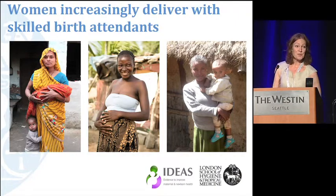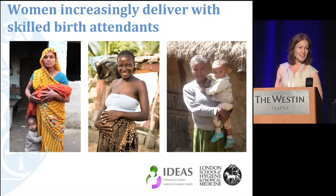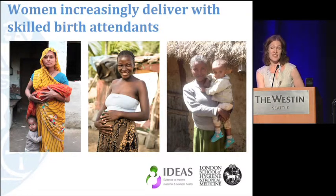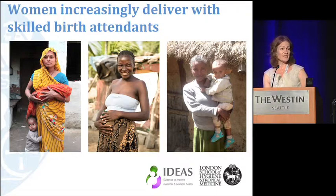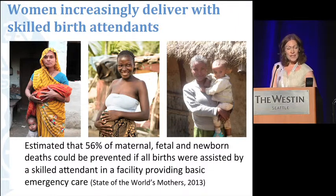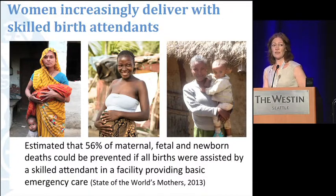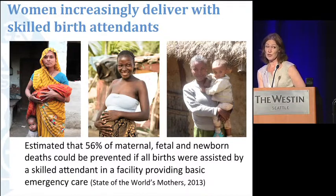On the left we have Meenakshi from Uttar Pradesh; in the middle, Hadiza from Gombe State in the northeast of Nigeria; and on the right, Dela from Ethiopia. These three women all did the right thing — they are success stories. They all delivered their last child in a primary health facility with a skilled birth attendant. We think of them as success stories because we know from available evidence that up to 50% of obstetric-related mortality could be reduced by those actions.